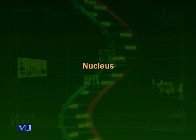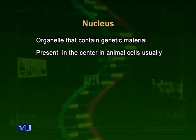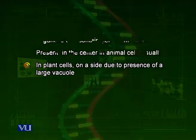First of all, the nucleus. The nucleus is a very important part of the cell. It holds the hereditary genetic material in the form of chromosomes. The nucleus is usually present in the center in animal cells. But in plant cells, the nucleus is not present in the center because mature plant cells have a very large vacuole in the center, which pushes the nucleus towards a side.